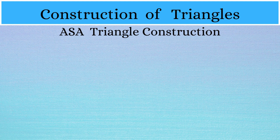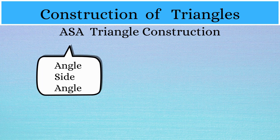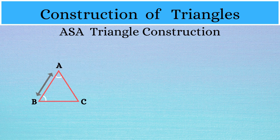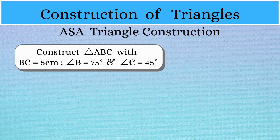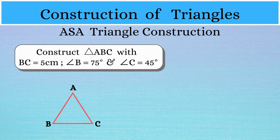Now we move on to ASA triangle construction. ASA stands for angle, side and angle. To construct a triangle using the ASA condition, we need to have two of its angles and the included side. Construct triangle ABC with BC equal to 5 cm, angle B equal to 75 degrees and angle C equal to 45 degrees. As our first step, we'll draw a rough sketch of triangle ABC with the given measurements.